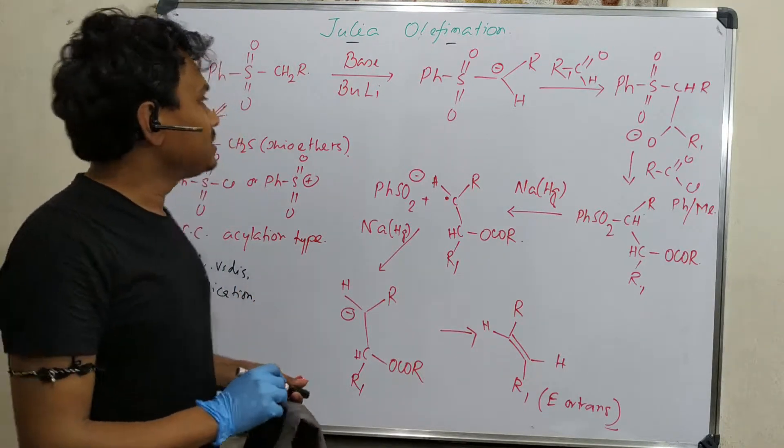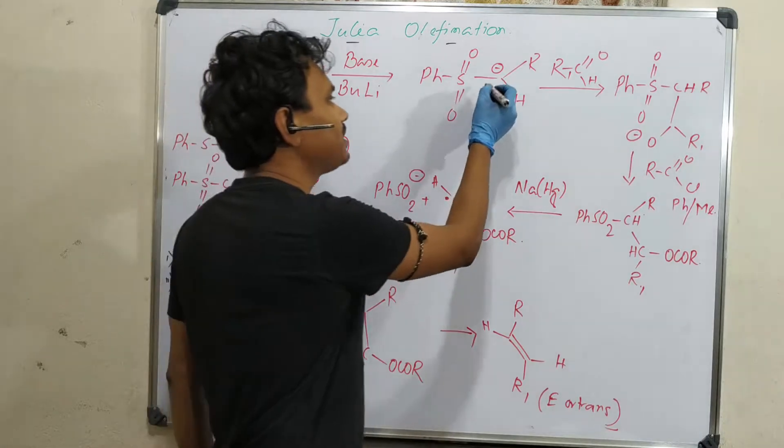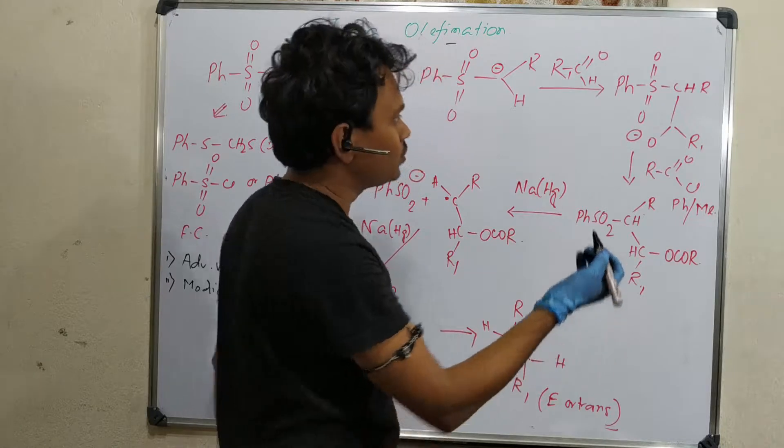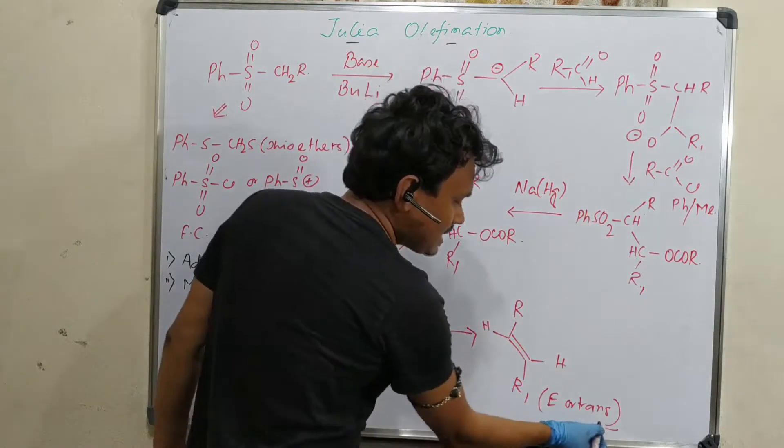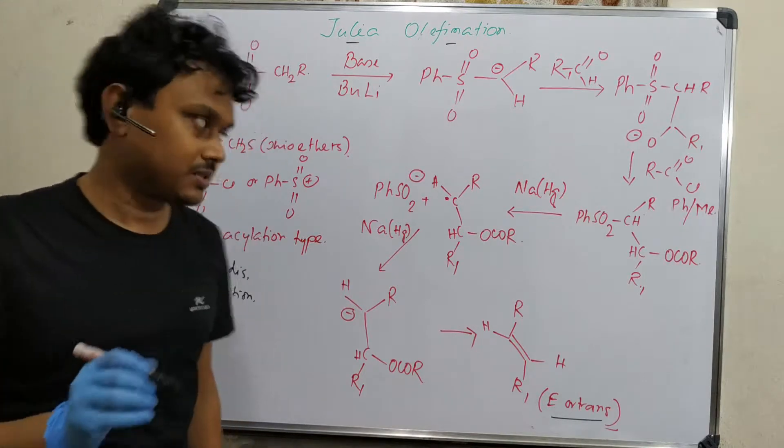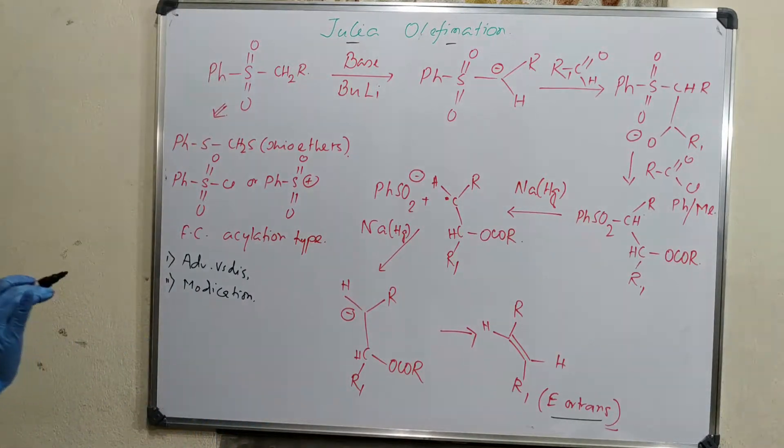This reaction is between a carbanion and an aldehyde or ketone to produce final E-alkene or trans-alkene selectively.